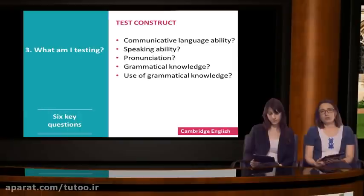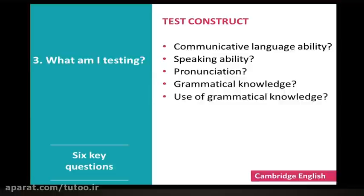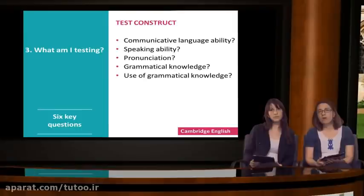Now let's look at the third question: what am I testing? For example, am I testing communicative language ability? Or something narrower, such as speaking ability? Or maybe even narrower, such as pronunciation? Or am I testing grammatical knowledge or the use of that grammatical knowledge? The key concept here is test construct. This is one of the most fundamental concepts in assessment. A construct is an ability or a skill. In technical language, we refer to this as a latent trait - latent means something which is not easily observable, so a cognitive ability in your brain. Trait means an ability or a skill.